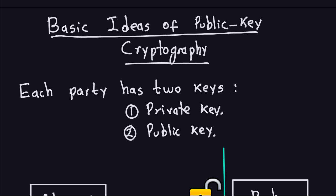The main difference between public key cryptography and symmetric cryptography is that each party has two keys. So instead of having only one key for encryption and decryption, we are going to have two keys. One of the keys is going to be a private key, which as the name indicates is going to be private, and the other one is going to be a public key, meaning anyone can know that key. The public key can be used by everyone, but the private key can only be used by the party who holds it.